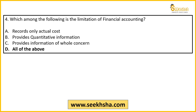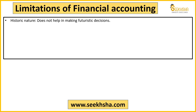Limitations को समझते हैं। सबसे पहली limitation है इसका historic nature — accounts में हम आज की transactions record कर रहे हैं, और जब financial year end होगा तब final result पता चलेगा। Criticizers कहते हैं कि अब तो हमें past transactions का पता चल रहा है — यह completely futuristic decision लेने में कैसे help करेगा? Future में क्या situation हो, वो अलग हो सकती है। Managers को और चीज़ें देखनी पड़ेंगी।